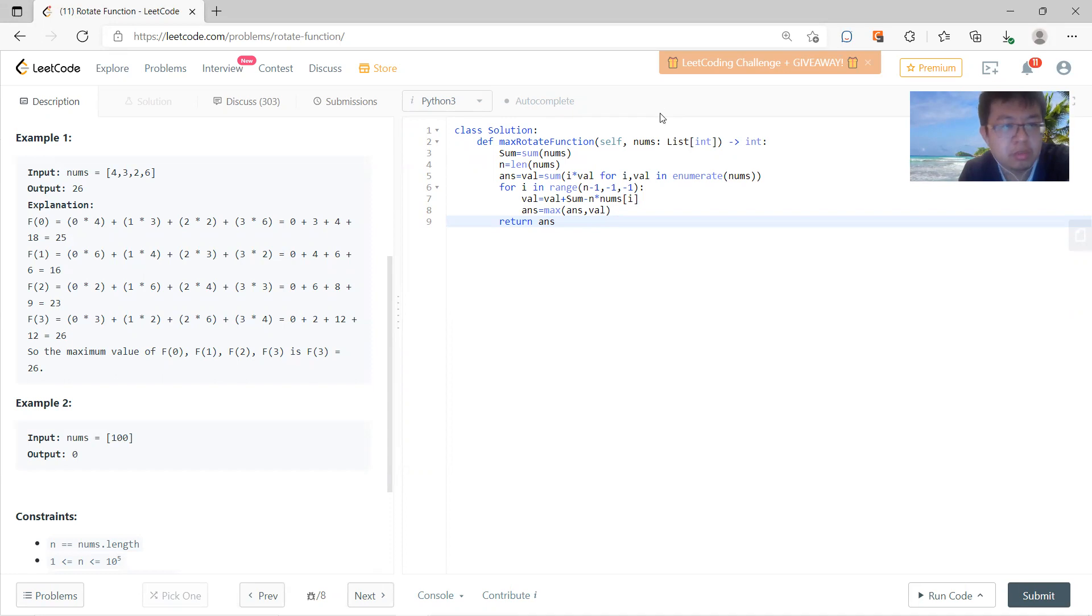So zero becomes here, it becomes here, and then one becomes zero, so basically everything shifts to the right.